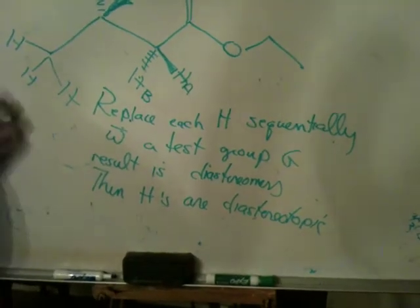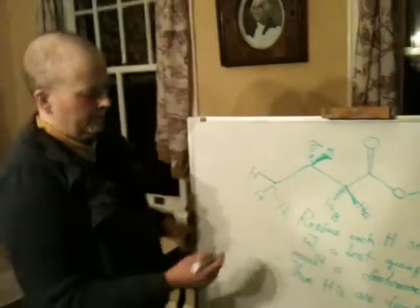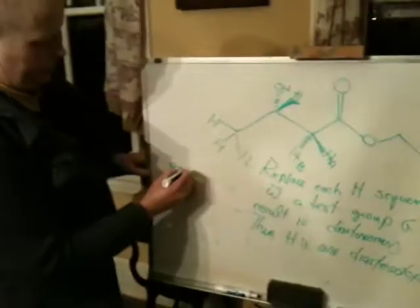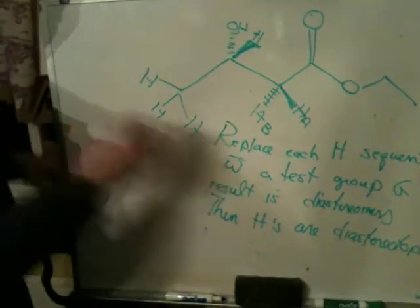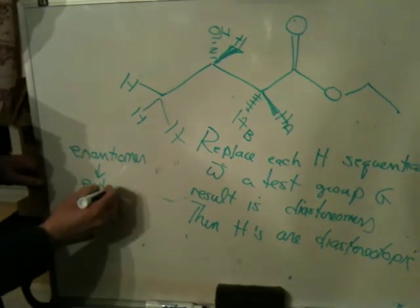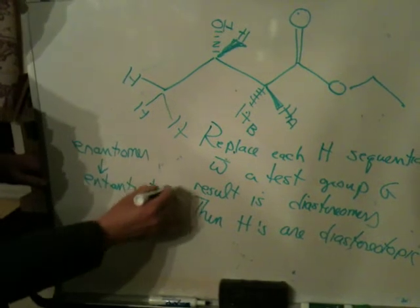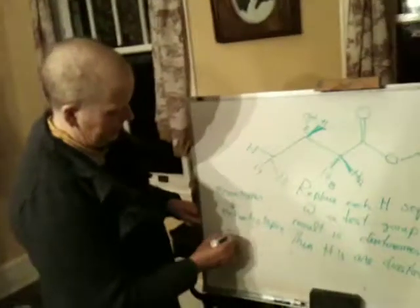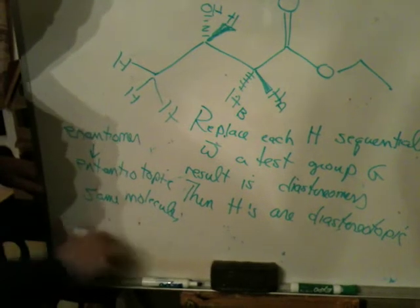Similarly, if you replace the hydrogens sequentially with a test group and the result is enantiomers, they're called enantiotopic. If you do the same process and you get the same molecules, they are homotopic.